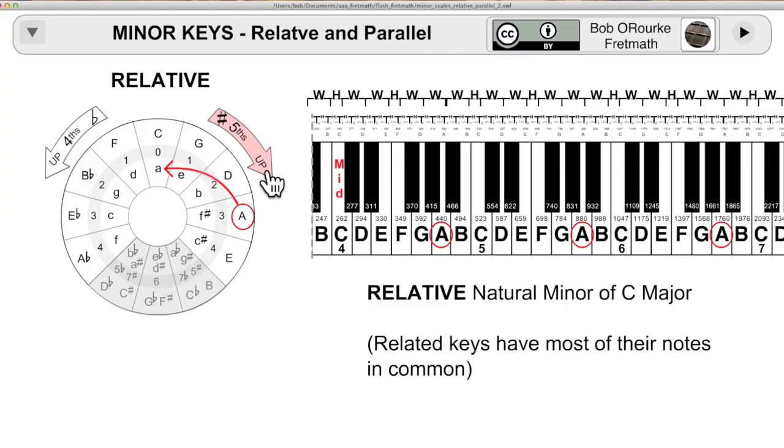The relative generally means notes in common, and the natural relative minor has every note in common with its relative major. Here, C major and A minor are the white keys on the piano and you're just starting at a different place.